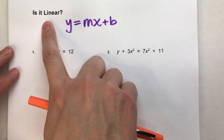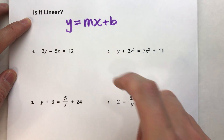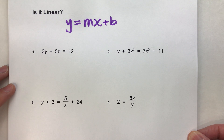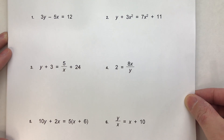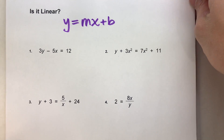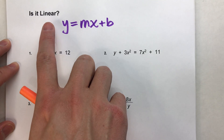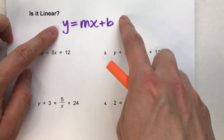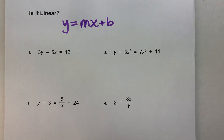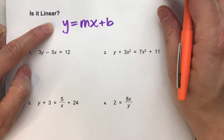Today I'm going to show you how to determine if an equation is linear — in other words, if I was to graph the equation, would it form a straight line? I've got six example equations to go through so you get an idea of how to do this. The key to determining if an equation is linear is this form of equation right here: y equals mx plus b. Remember, this is called slope-intercept form.